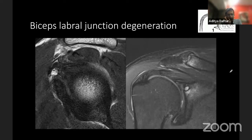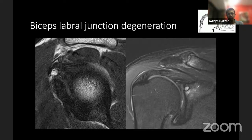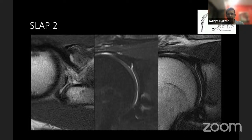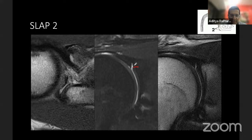Here's another example where you can see degeneration at the biceps labral junction along with development of intraosseous cystic change in the superior glenoid. Here's someone with a more discrete SLAP 2 lesion — comparing the labrum, you can see it has come off and the cartilage stops at this point. The labral cleft extends above the level of the cartilage, and therefore this is a SLAP 2 lesion.